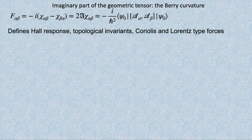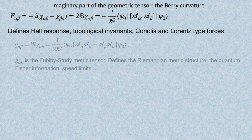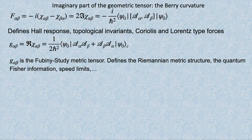There is a part of this geometric tensor I'm not going to talk about, which most of you have seen one way or another: the imaginary part. This is nothing but the Berry curvature. The Provost-Vallee paper appeared in 1980, when they said this object is probably physically irrelevant. In 1984, there was a paper by Berry who introduced this. If you've heard about the quantum Hall effect or topological insulators, this object plays a key role—it's like a magnetic field in coupling space.